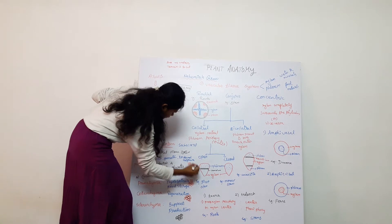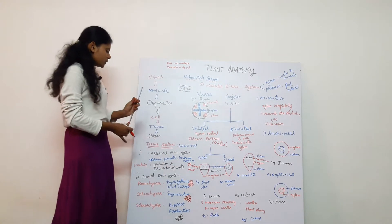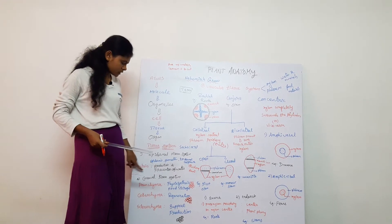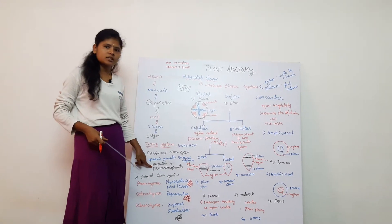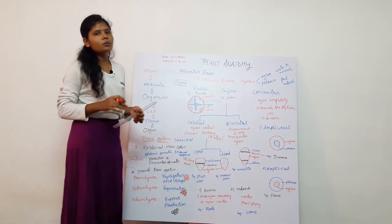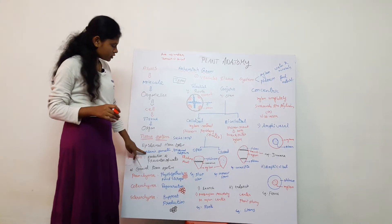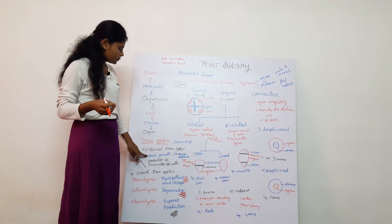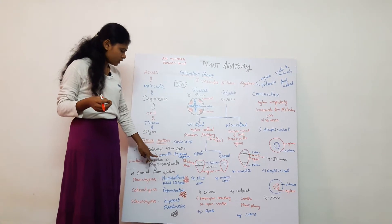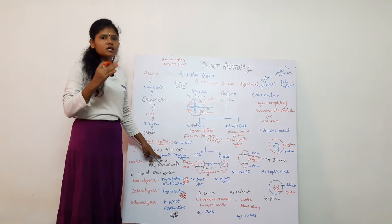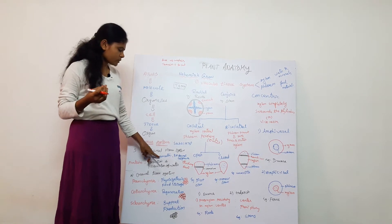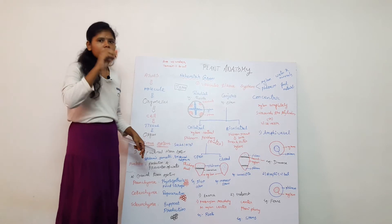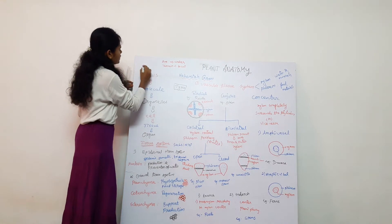What are the functions of the epidermis? The epidermis is the outermost layer and provides protection. It can also produce internal parts. It is involved in transpiration and gaseous exchange. It is covered by a cuticle.